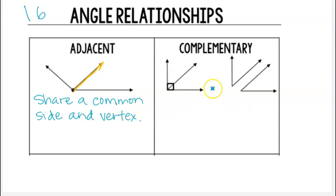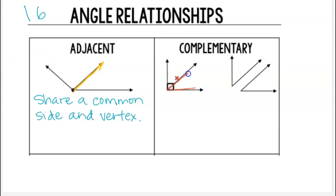Next we have complementary angles. I want to direct your attention to the square in the angle. This means that the angle is 90 degrees in sum, and we also have two angles here that are creating this larger 90 degree angle.